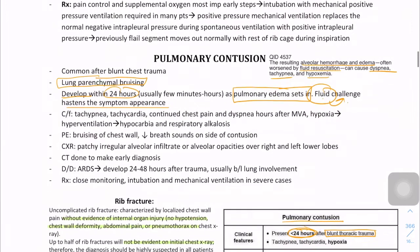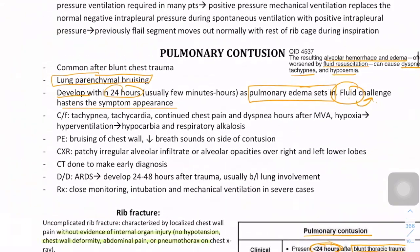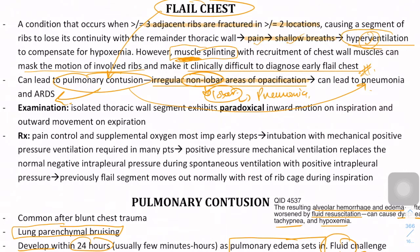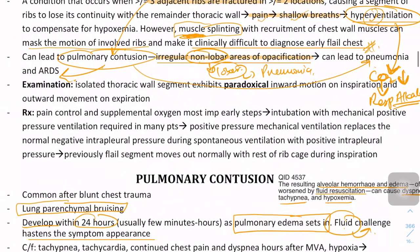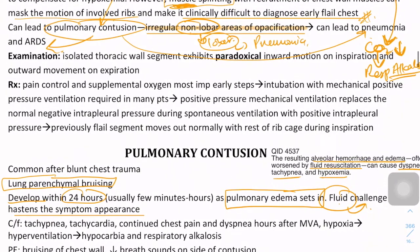The patient will present with dyspnea, tachypnea, and hypoxemia. During hyperventilation, the oxygen content will decrease, which may also cause respiratory alkalosis. On physical exam, one of the typical signs you will see is paradoxical chest wall motion. During normal inspiration there is outward movement of the chest wall, and during expiration there is inward movement.